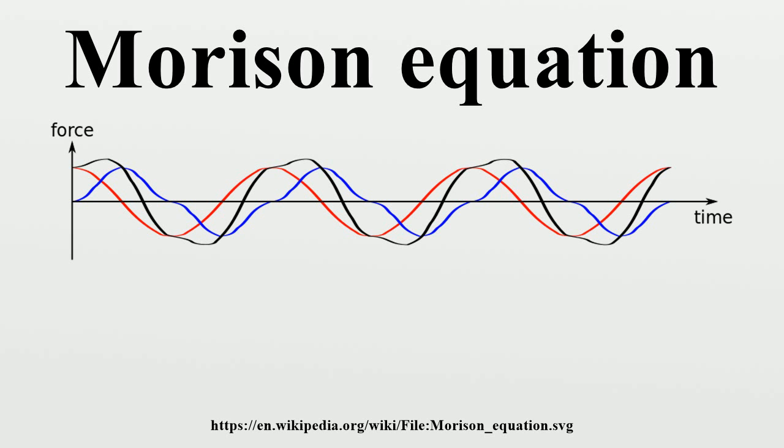V is the volume of the body. For instance, for a circular cylinder of diameter d in oscillatory flow, the reference area per unit cylinder length and the cylinder volume per unit cylinder length gives the total force per unit cylinder length.